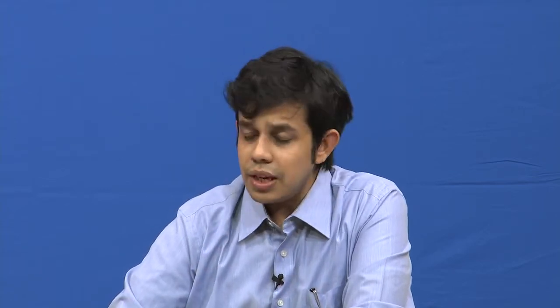But in an actual real flame structure with detailed chemistry, we can consider that. So far we have considered detailed chemistry only in the framework of a homogeneous mixture — that went into the kinetics classes and the oxidation mechanism of fuels. The difference between a homogeneous reactor and a flame is that in a flame you have strong diffusion of heat and strong diffusion of species going on.